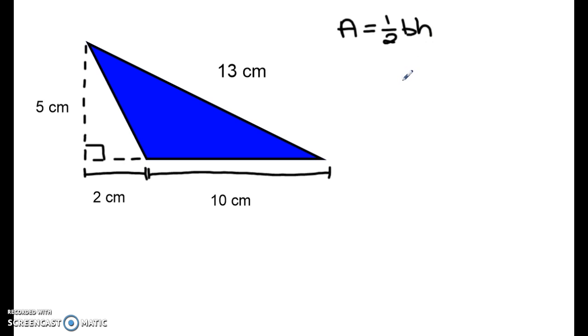Remember that the base has to be a side of the triangle. So my options are 10 centimeters, 13 centimeters, or this unknown side here which I don't know its length. I'm going to use 10 centimeters as my base because I have the height of 5 centimeters which corresponds with that. Do you see how the length of 5 centimeters forms a right angle with the base of 10 centimeters? So my base is 10 and my height is 5.